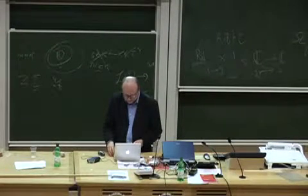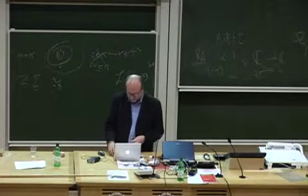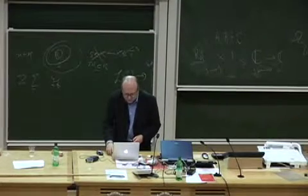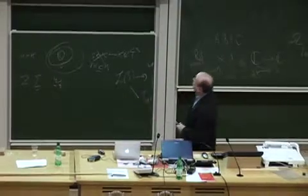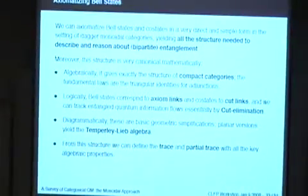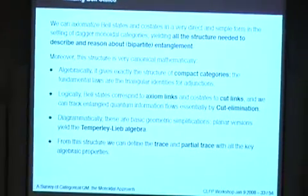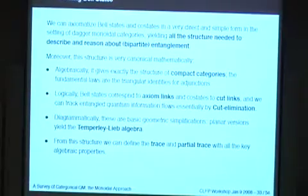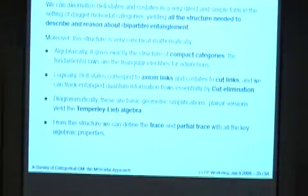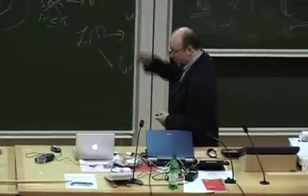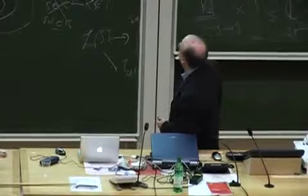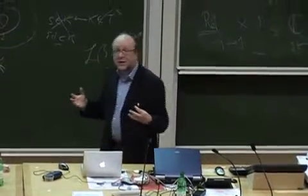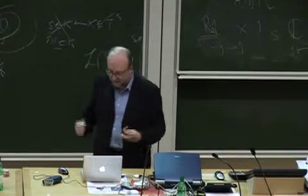Logically, the Bell states correspond to axiom links and co-states to cut links, and we can track entangled quantum information flows by cut elimination. Diagrammatically, these are very basic geometric simplifications, and planar versions yield the Temperley-Lieb algebra that plays a central role in the Jones polynomial. We also get a lot of other structure once we assume this compact structure — in particular, the trace and partial trace with all the key algebraic properties. In some sense, with this we have enough power to do all the multilinear algebra we need without ever needing any substrate of linear algebra sitting underneath. It can all be done diagrammatically. A partial trace closes part of the system by forming a loop, and when we close the whole system, we just get outright loops — the natural geometric interpretation of our scalars.